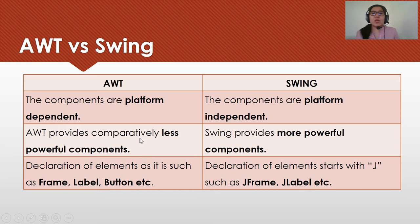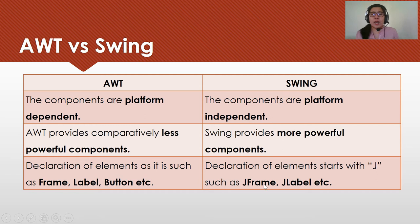AWT provides comparatively less powerful components as to SWING. And in terms of declaration of elements, it is declared as it is — frame, label, button, and others — while for SWING it usually starts with the letter J, such as J-Frame, J-Label, J-Button, and others.